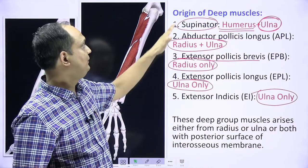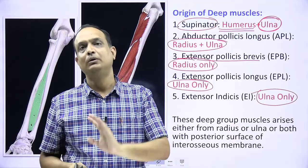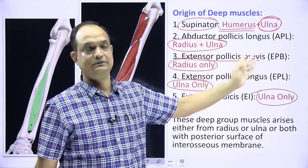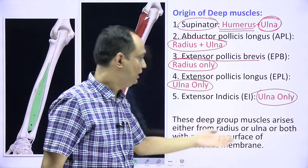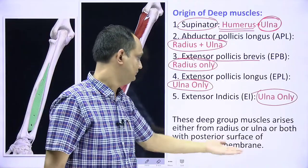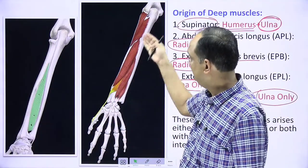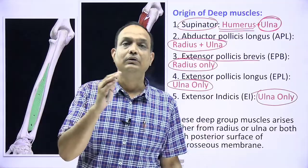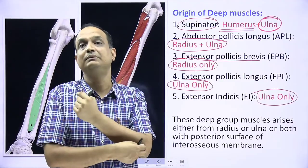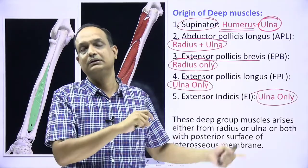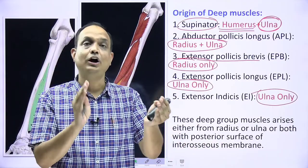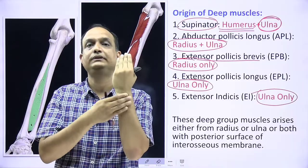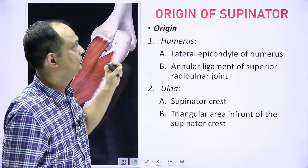The supinator crest gives the ulnar head of the supinator, while the lateral epicondyle gives the humeral head. This is a frequently asked exam question: mark the supinator crest — trace the interosseous border of the ulna and mark the upper part. Abductor pollicis longus arises from both forearm bones (radius and ulna) and is the only muscle in the posterior compartment with this combined origin.